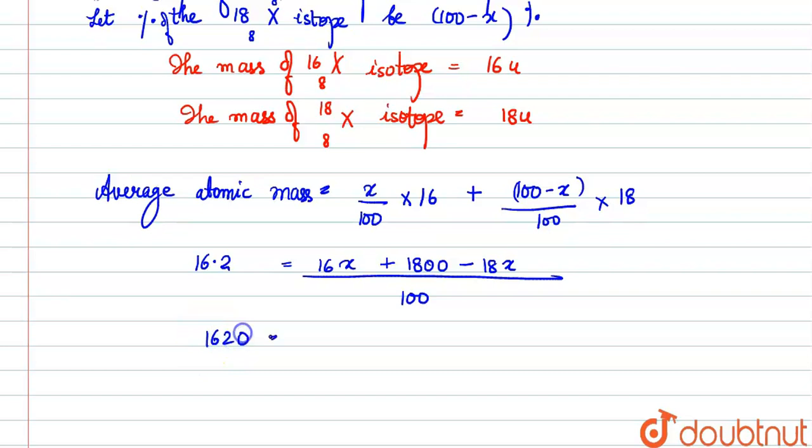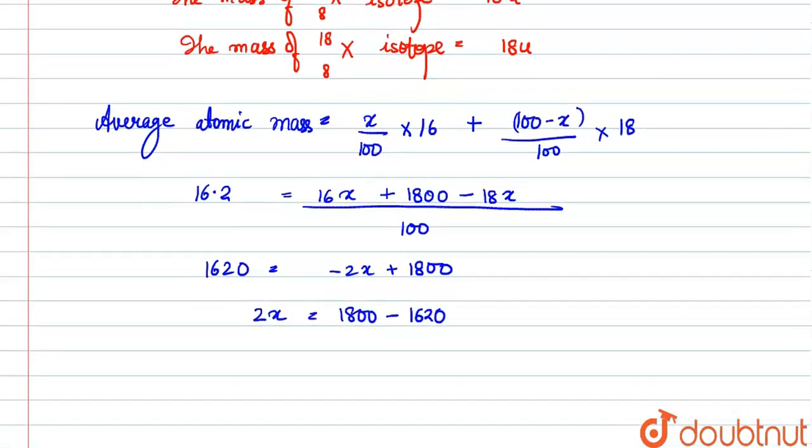1620. Here both these will be minus, so minus 2x plus 1800. Now this 2x comes there, so it becomes plus. And this 1800 minus 1620 becomes: 2x equals how much?